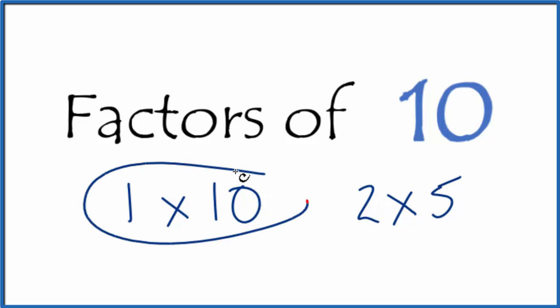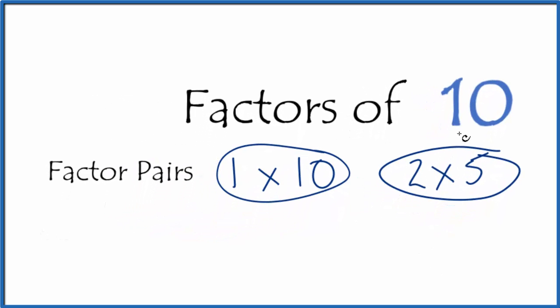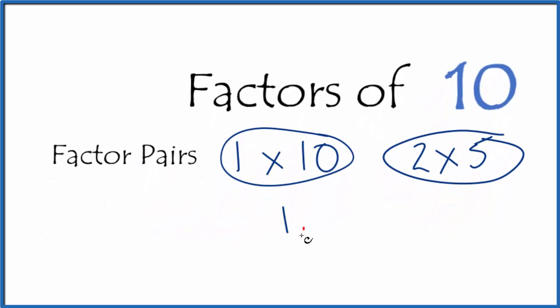So we have these two what we call factor pairs for 10. If we want to write the factors for 10, we have 1, 2, 5, and 10. These are our factors for 10. Let's put them up top here.